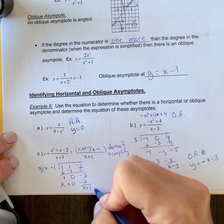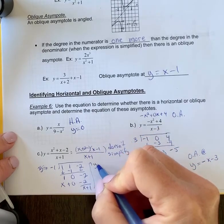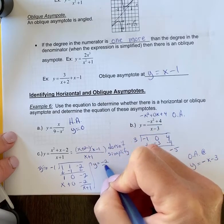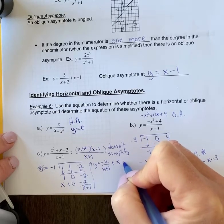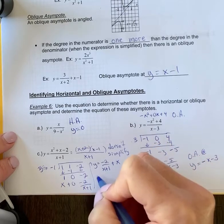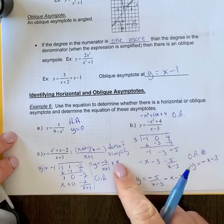So my equation would be y equals negative two over (x+1) plus x. There's no sense in putting x plus zero, so my oblique asymptote would be this tail-end part here.